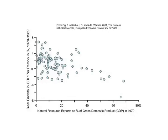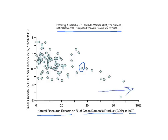This is a redrawn figure from Sachs and Warner, a famous paper from back in 2001. Each dot on here is a country. What we have at the bottom is how much of the economy of that country was exports of natural resources in the year 1970. The countries that exported a lot of natural resources are out here; the countries with very little natural resources as a fraction of the total economy are down there.